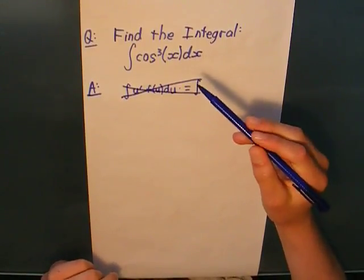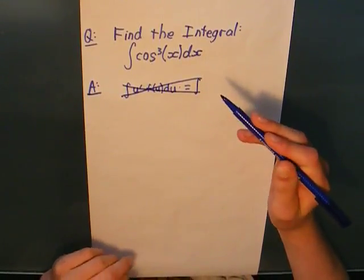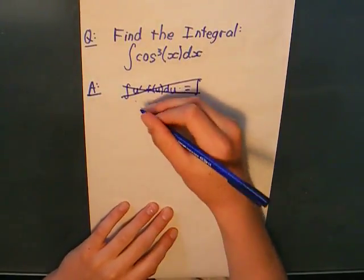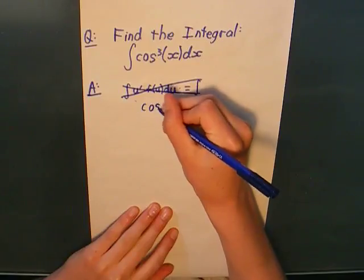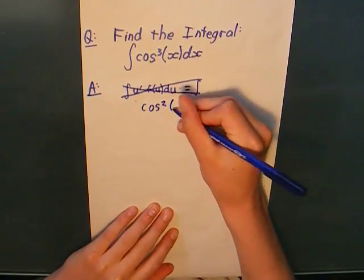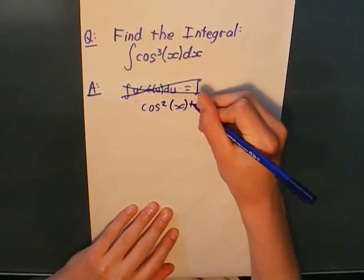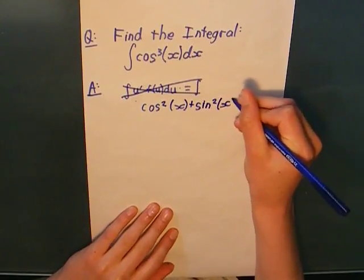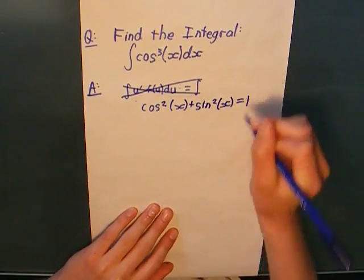To start the substitution method, in this case, I'm going to have to rearrange the integral. Now, as some of you may know, the trigonometric identity cos²(x) + sin²(x) = 1 holds here.